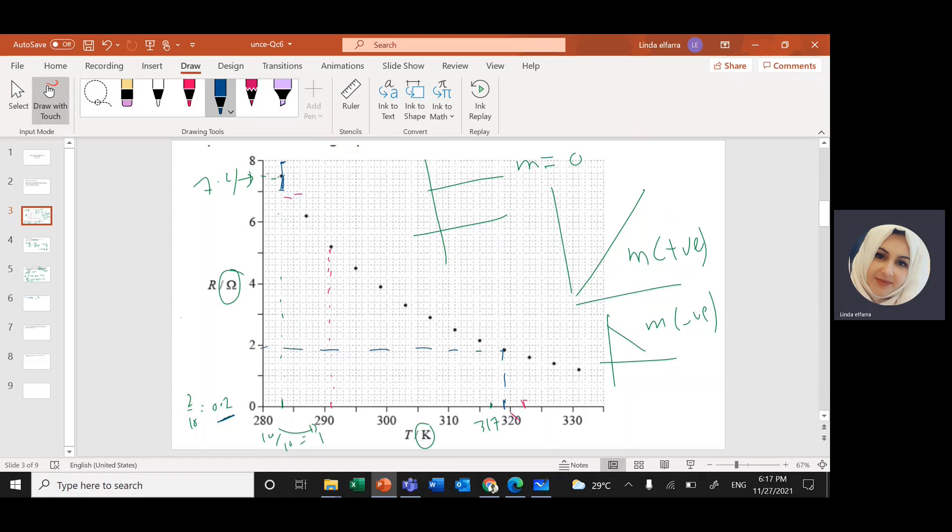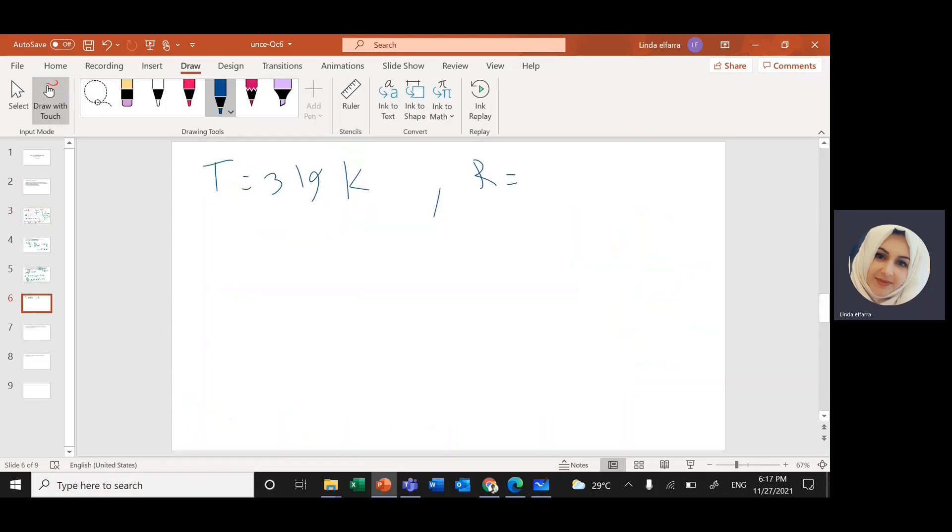So this one, it will be around 1.8. So R will be 1.8. And we have the formula delta R over R will equal 0.05. Now substitute delta R over 1.8 will give me 0.05. Cross multiplication. So delta R will be around 0.1.